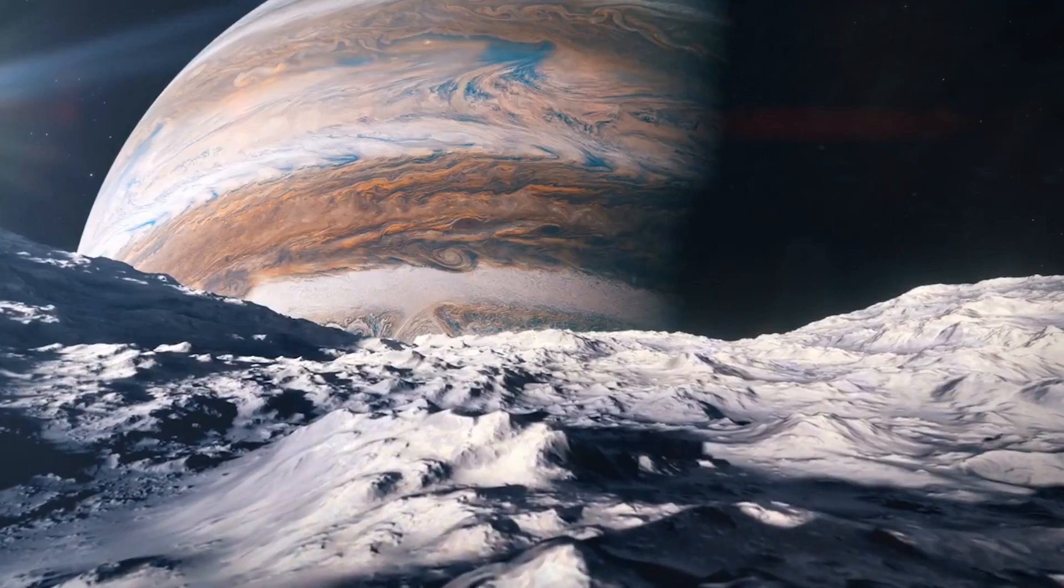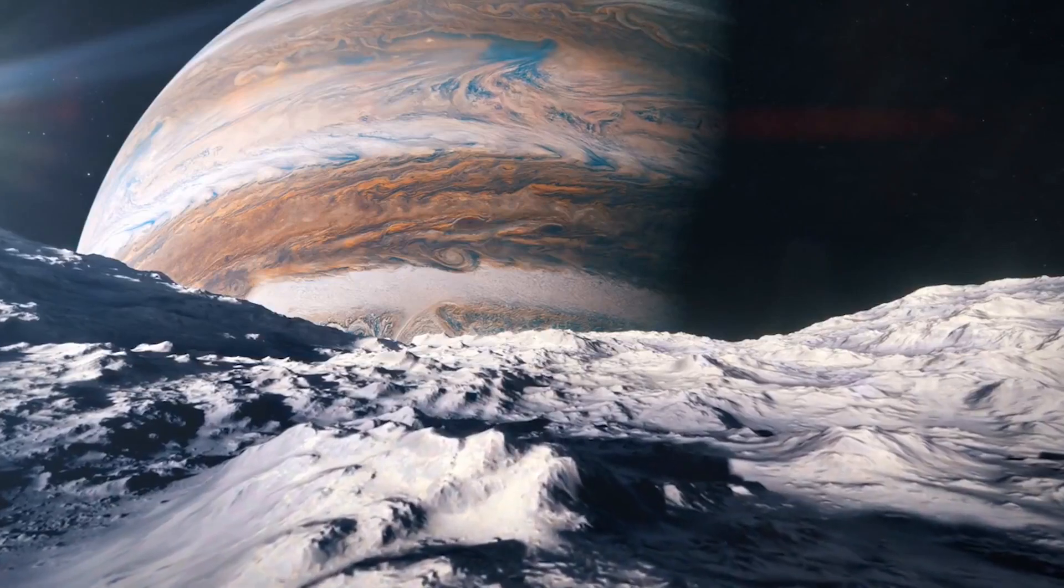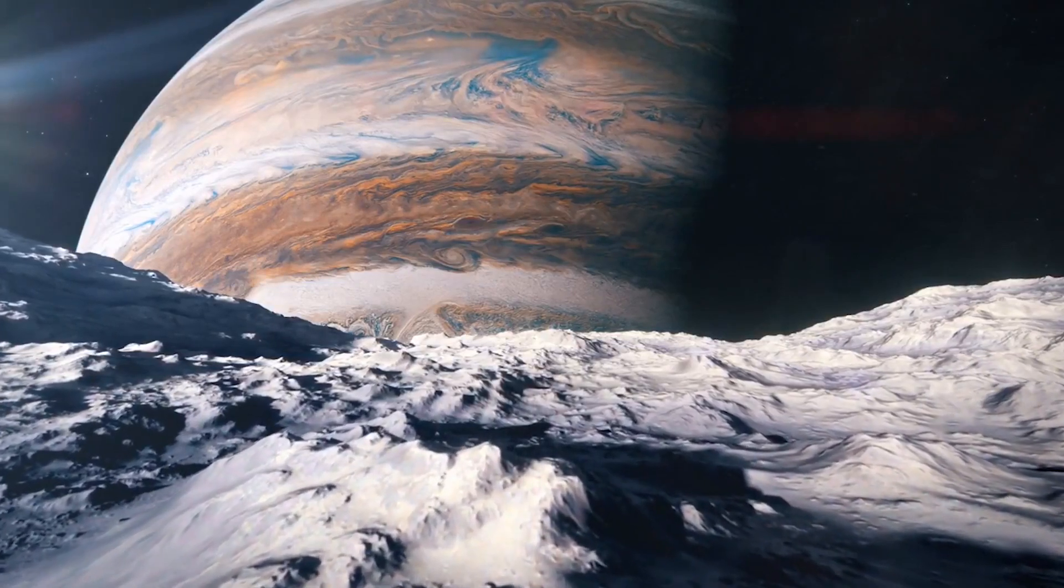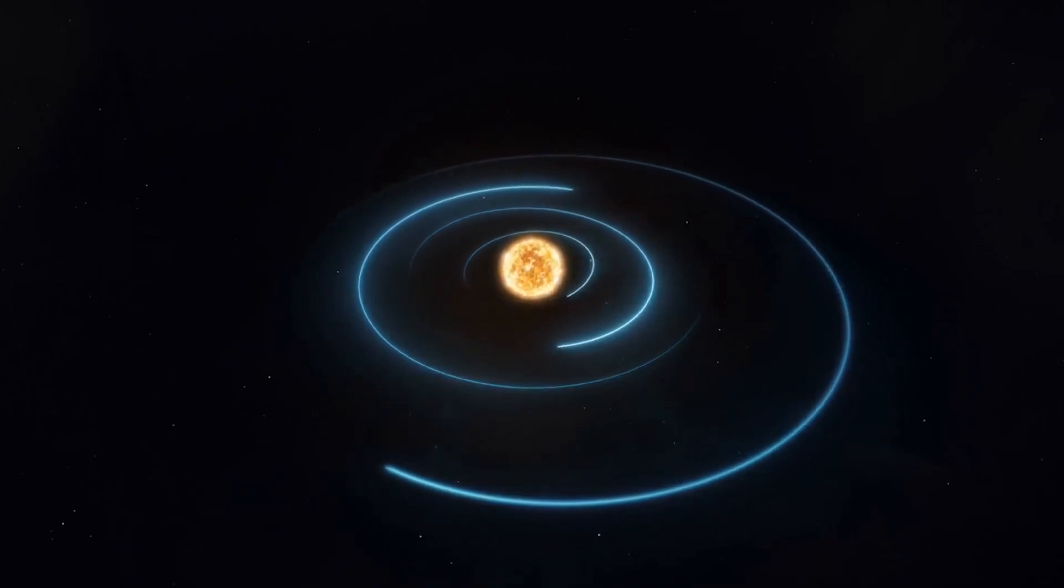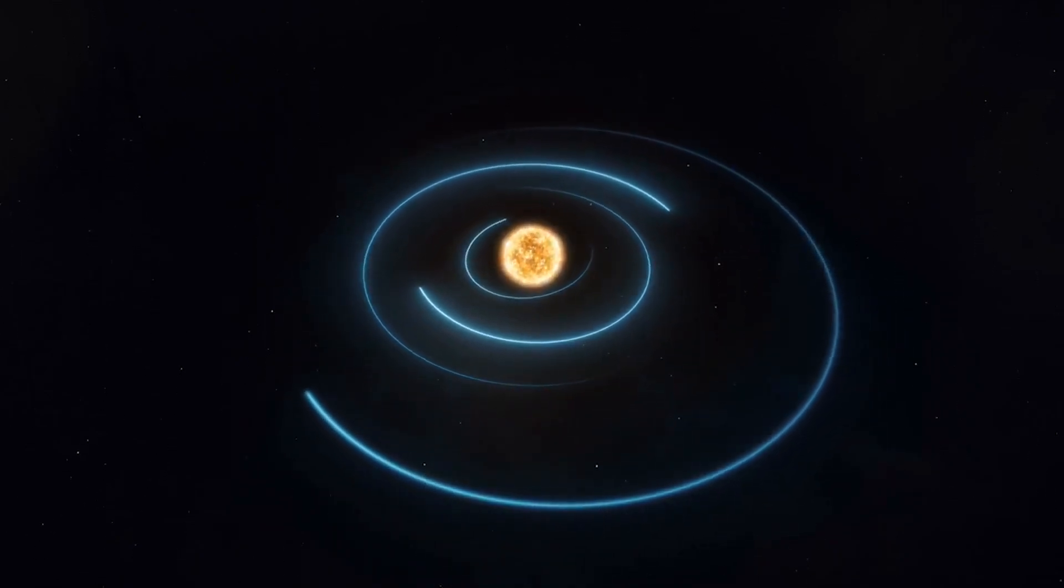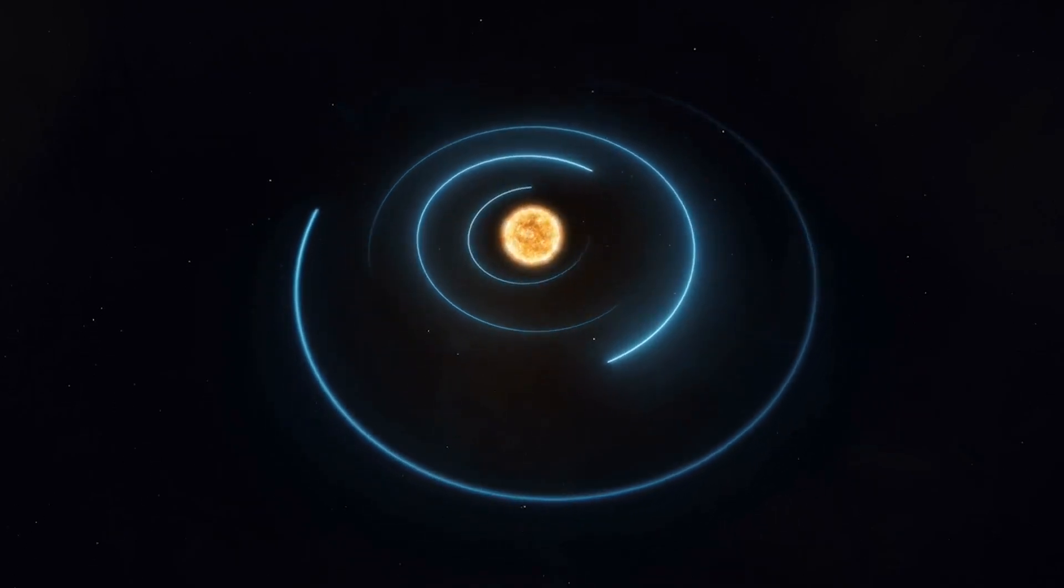NASA showed a transmission spectrum of a hot exoplanet after the Deep Field picture. WASP-96b is a hot Jupiter with a mass less than half of Jupiter and a diameter 1.2 times that of Jupiter. The temperature on this planet reaches 1,000 degrees Fahrenheit, or 540 degrees Celsius. The planet circles its star every 3.4 days and is about 1,150 light-years away from Earth.